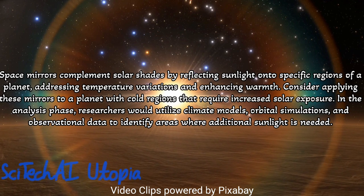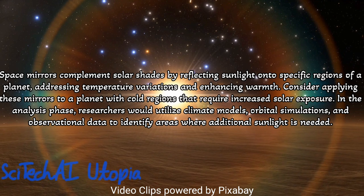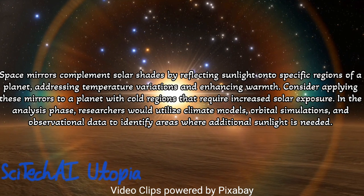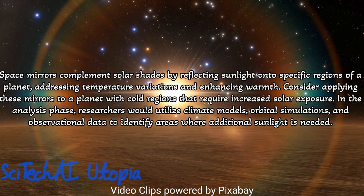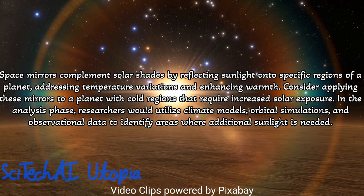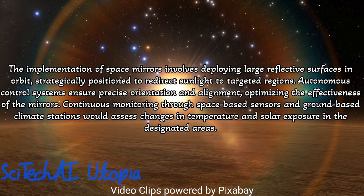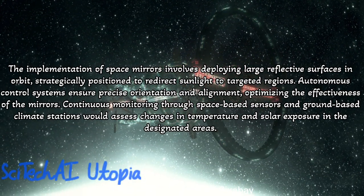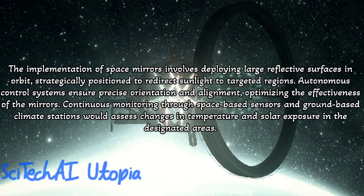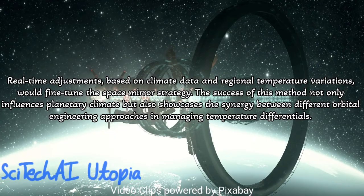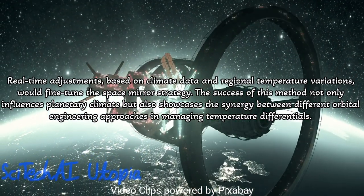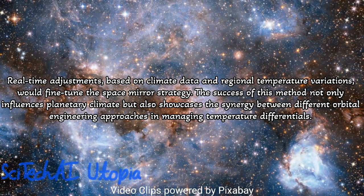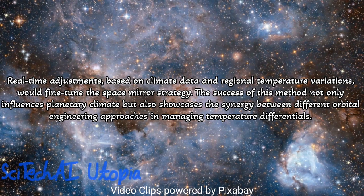Method 9: Space Mirrors. Launch and position an array of large mirrors in orbit around the planet to redirect sunlight selectively to different regions. Develop precise orbital mechanics and navigation systems to ensure accurate positioning and optimize the distribution of sunlight on the planet's surface. Implement a real-time control system that adjusts the orientation of mirrors to account for the planet's rotation and orbit, preventing localized overheating or cooling. Integrate advanced materials for the mirrors considering reflectivity, durability, and resistance to space debris and radiation. Establish redundant communication systems and fail-safes to ensure continuous and controlled operation of the space mirror network.